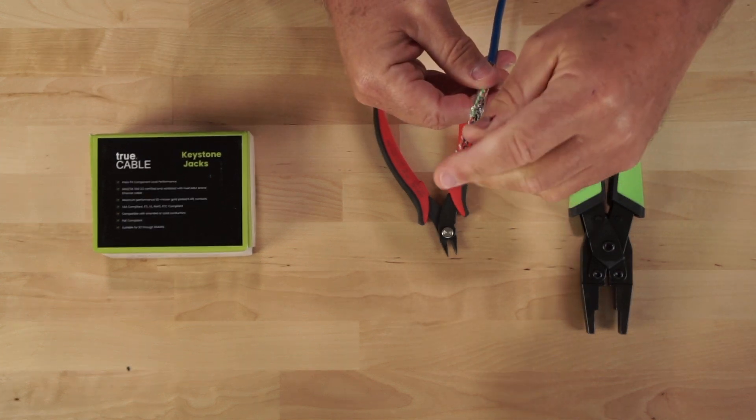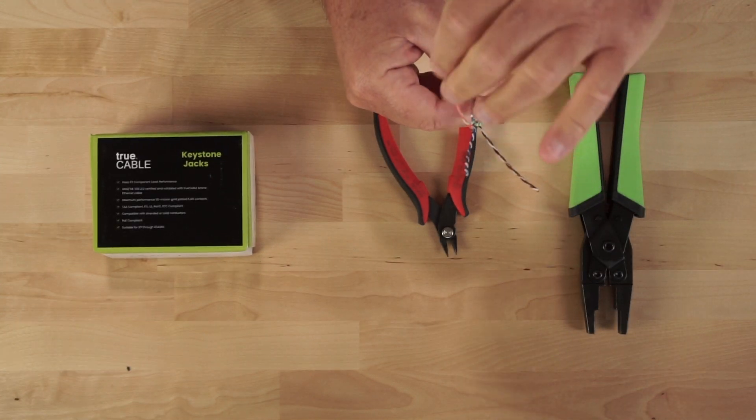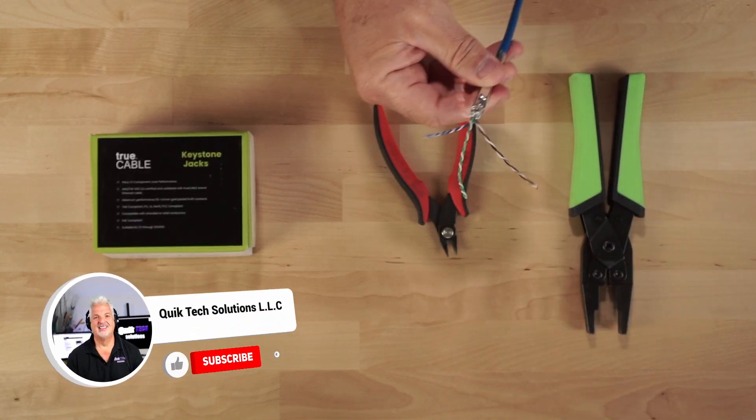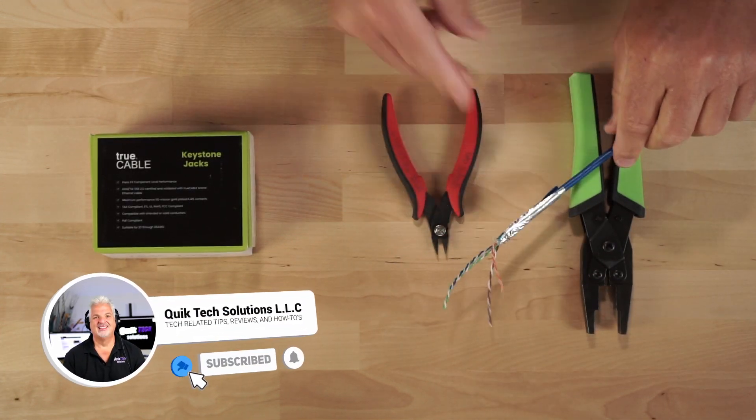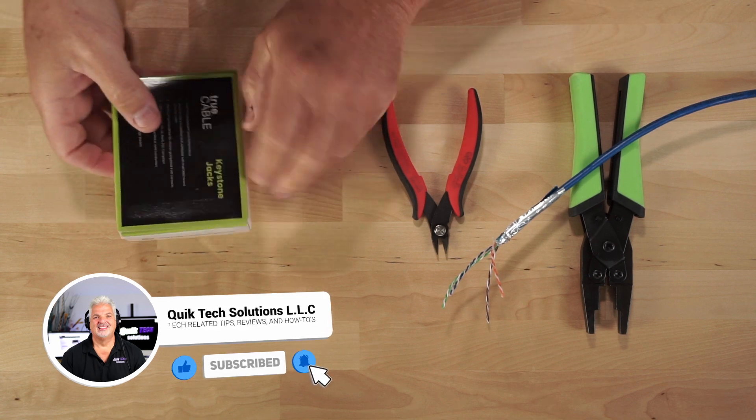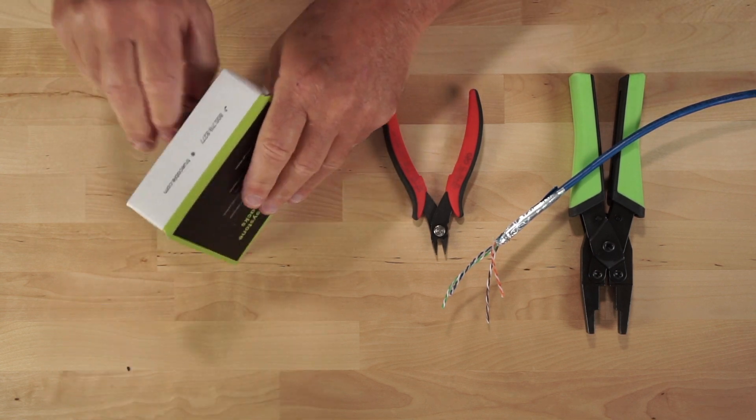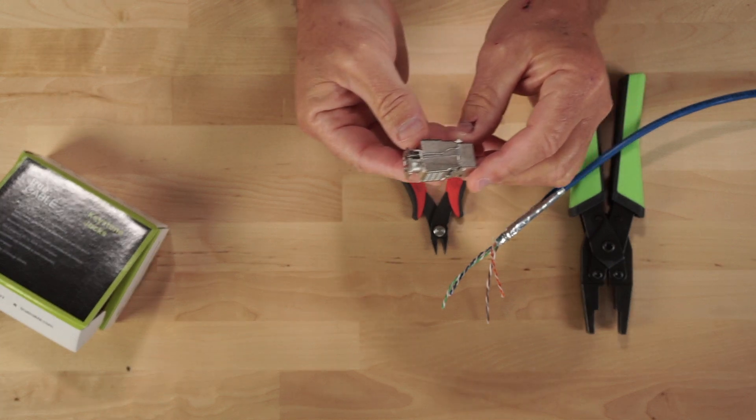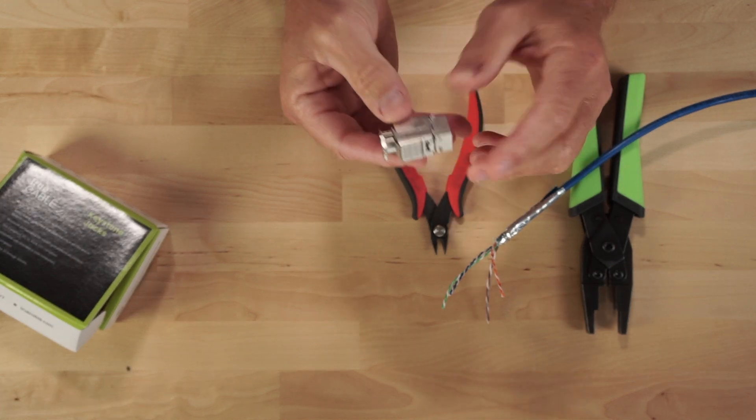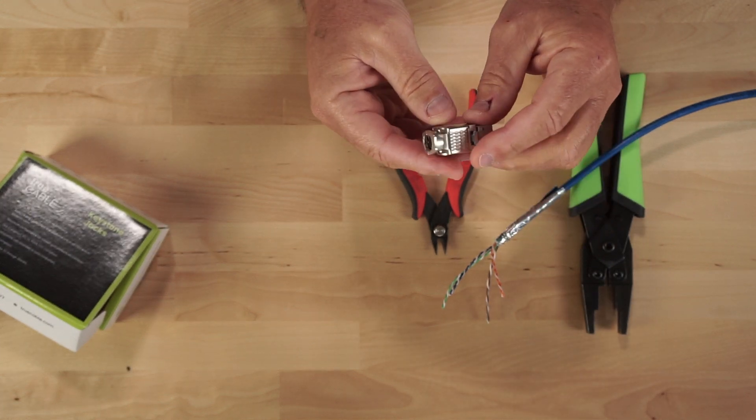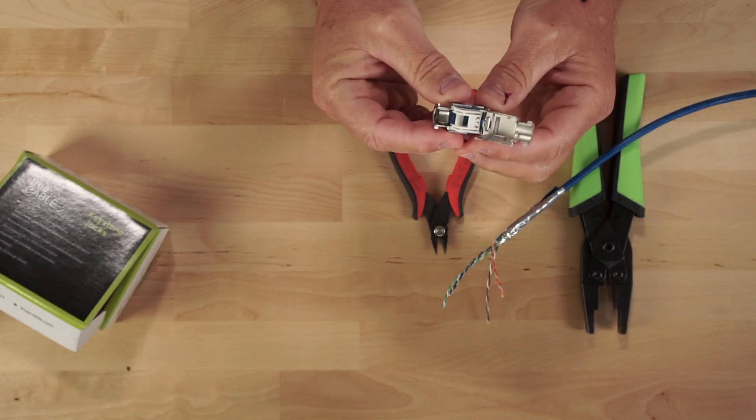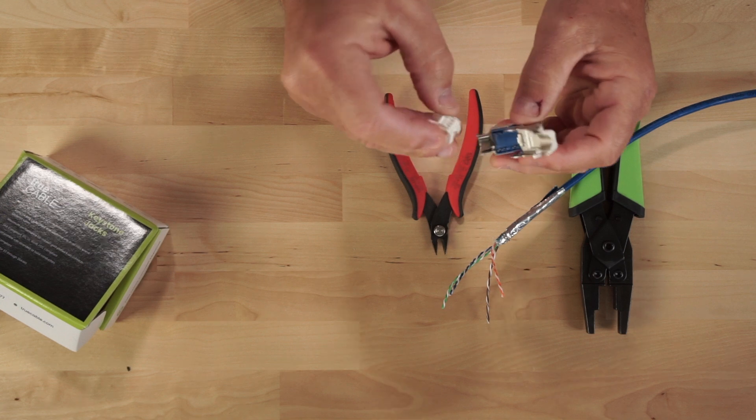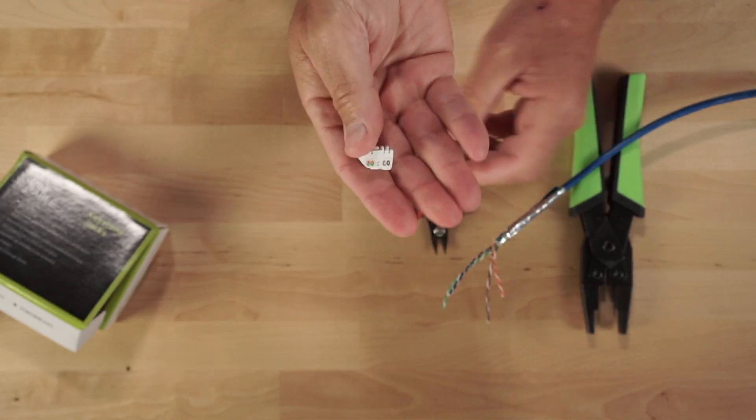So let's separate out our wires, our pairs actually. Okay, and this is the TruCable shielded keystone jack. This is a Cat5e jack. Now when you open it up, you can see there's a plastic insert here. This is removable. You see that there? It comes out.